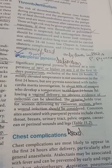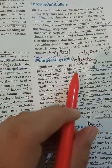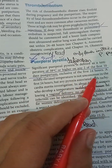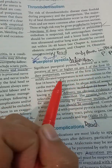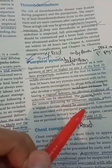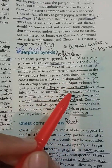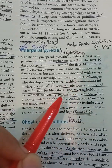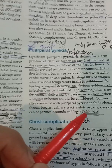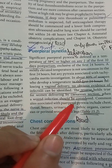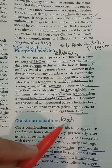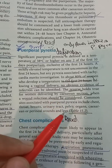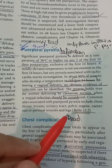Puerperal pyrexia is defined as a temperature of 38°C or greater on any two of the first 10 days exclusive of the first 24 hours after vaginal delivery. After cesarean section, fever in the first 24 hours should be considered as infection. Commonly associated sites include chest, throat, breast, renal tract, pelvic organs, cesarean section insertion, perineal wounds, and legs.